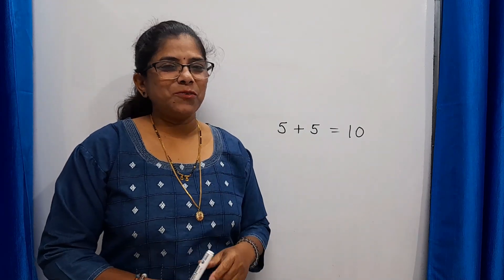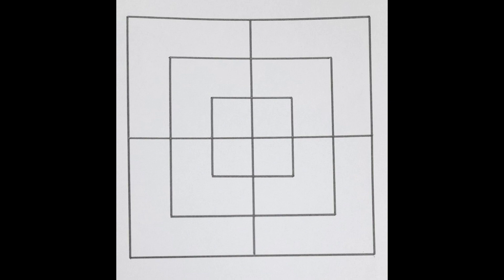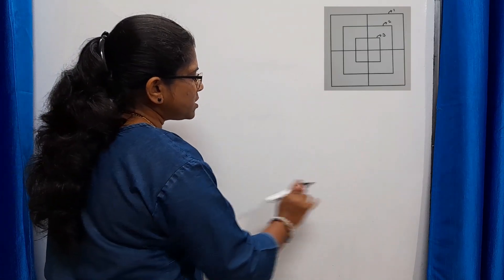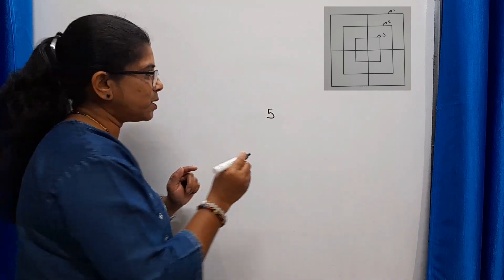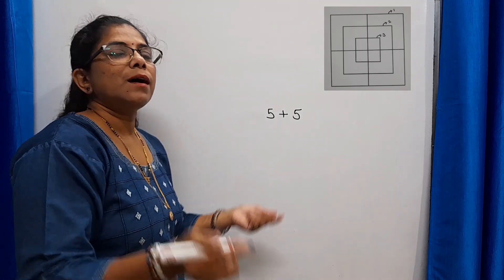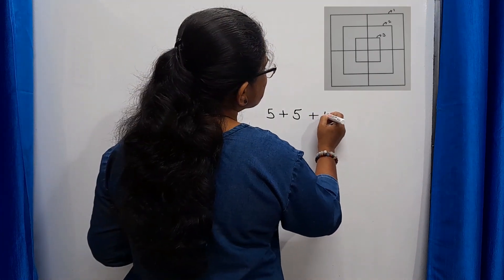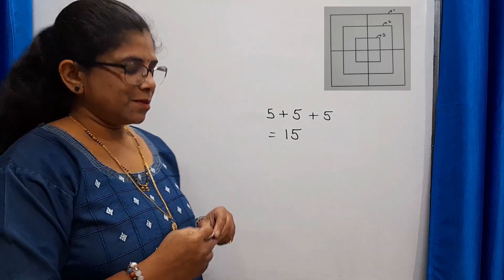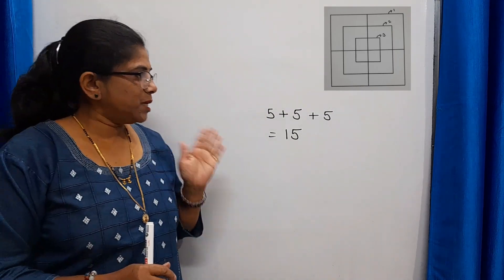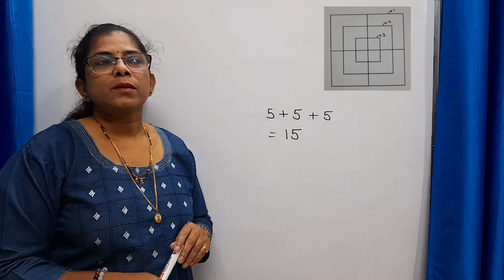Let's look at one more figure of this type. Here there is one big square, one more square inside it, and one more square inside that — three squares in total, all with a plus sign. For each square with a plus sign, we get 5 squares. So 5 + 5 + 5 = 15 squares altogether. Remember these basic things when you count the number of squares.